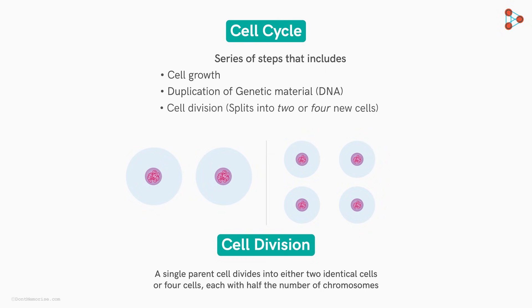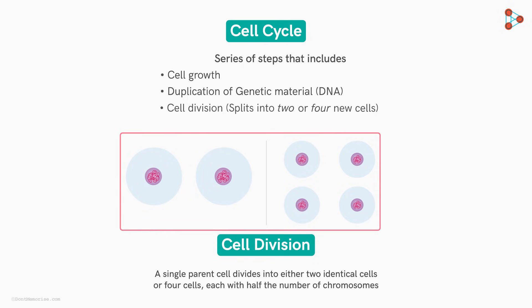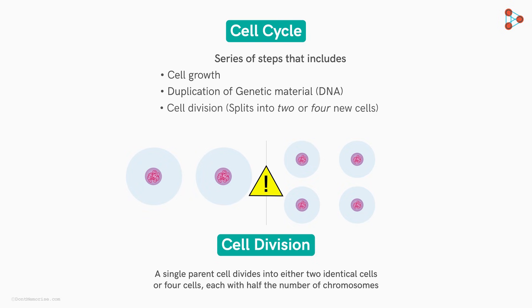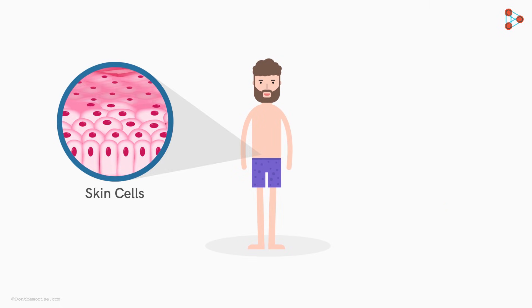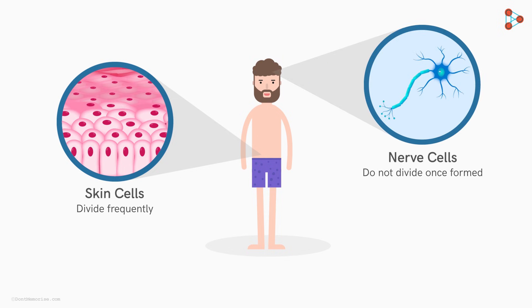Do all cells divide in the same way? The answer is a definite no. Every cell in our body has a different tendency to grow and divide. Some cells divide throughout their lifetime, while others do not divide once formed. For example, our skin cells have a high turnover rate due to constant wear and tear and divide very frequently, whereas our nerve cells do not divide once formed.